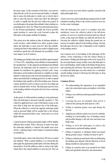In most helicopters, the proper flare attitude results in a ground speed of a slow run. When forward motion decreases to the desired ground speed (usually the lowest possible speed), position 4: move the cyclic forward to place the helicopter in the proper attitude for landing. Limiting the flare to that attitude may result in slightly faster touchdown speeds but will eliminate the possibility of tail rotor impact on level surfaces. The landing gear height at this time should be approximately 3 to 15 feet AGL, depending on the altitude recommended by the manufacturer.